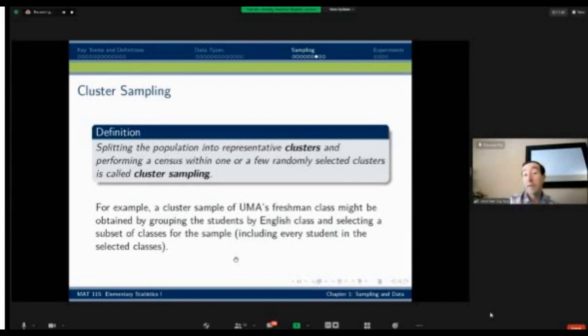For instance, if I wanted to again study UMA's freshman class, I can do that by grouping students by English class, and I could select a subset of the classes to include in my sample. Maybe section one, section three and section 11 are all included. But then the other sections are not represented at all. That would be a cluster sample. On the other hand, a similar stratified sample would include a few students from every single section of the course. And that's the distinction between stratified and cluster.